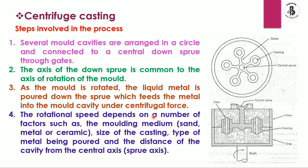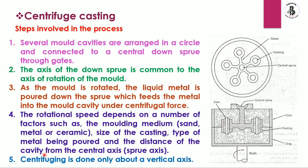The rotational speed depends on factors such as the molding medium (sand, metal, or ceramic), the size of the castings, the type of metal being poured, and the distance of the cavity from the central sprue axis. Centrifuging is done only about a vertical axis, which is a basic disadvantage of this process.